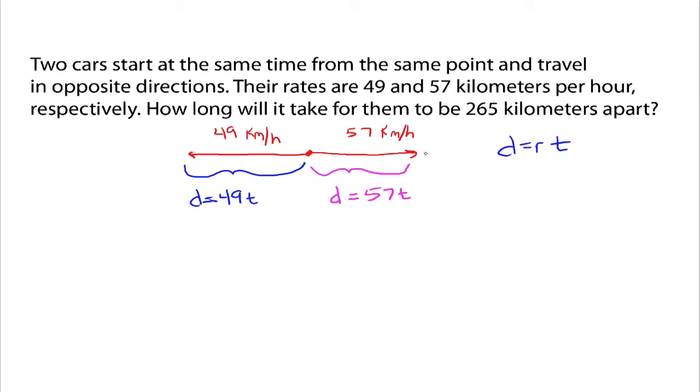Okay, because it's 57 kilometers an hour, and again, we don't know how long it is, but this distance over here to the right would be 57T. Now, we know that after so many hours, whatever it is, we want them to be 265 kilometers apart. So, that means this distance to the left, the D equals 49T, and this distance, 57T, those two things have to add up to 265 kilometers.